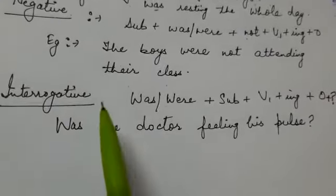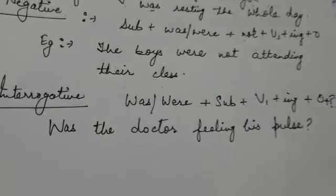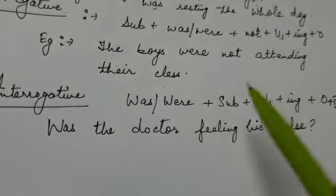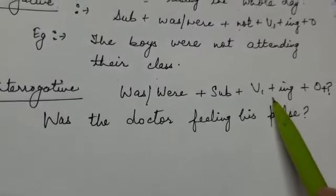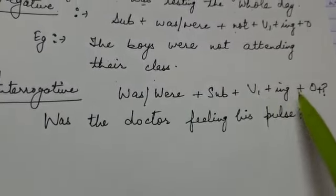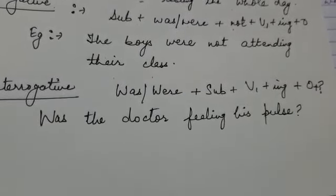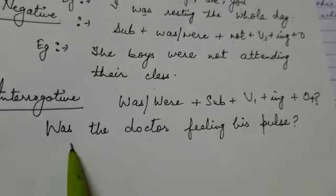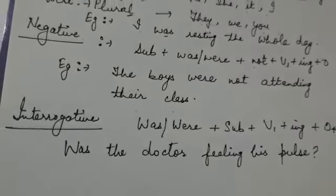Next is interrogative. In interrogative, most probably the helping verb will come first. Was/were + subject + verb's first form + -ing + object + question mark at the end. For example, 'Was the doctor feeling his pulse?' Kya doctor uski pulse ko feel kar raha tha?